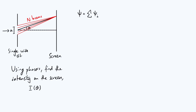Now psi and all the psi_i's are complex numbers defined so that their modulus is the amplitude of the corresponding wave and their argument is the phase. So if we want the amplitude of the overall wave we take the modulus of psi and square it — our intensity is going to be some constant multiplied by the squared modulus of psi.